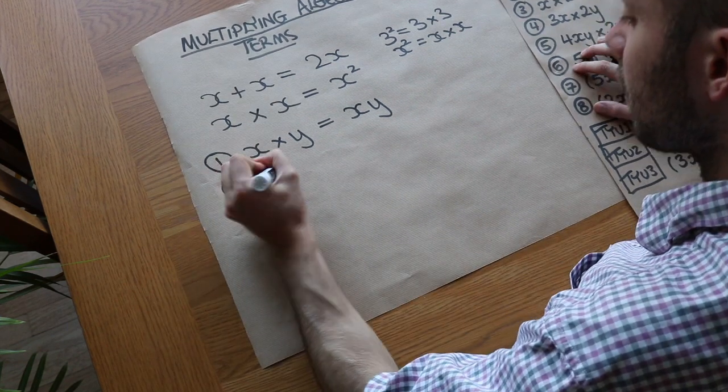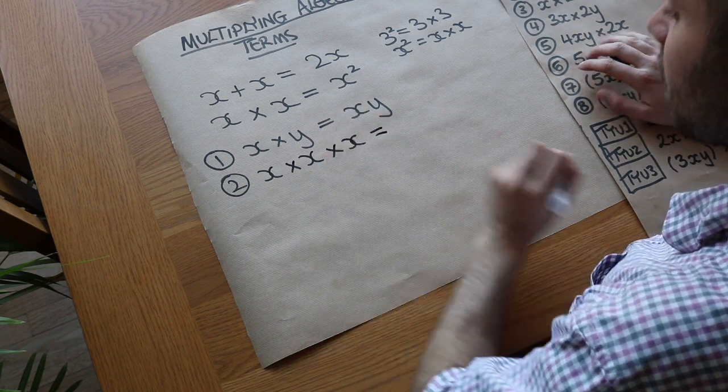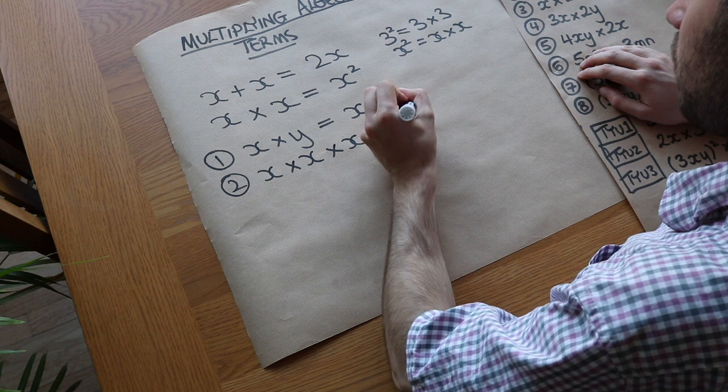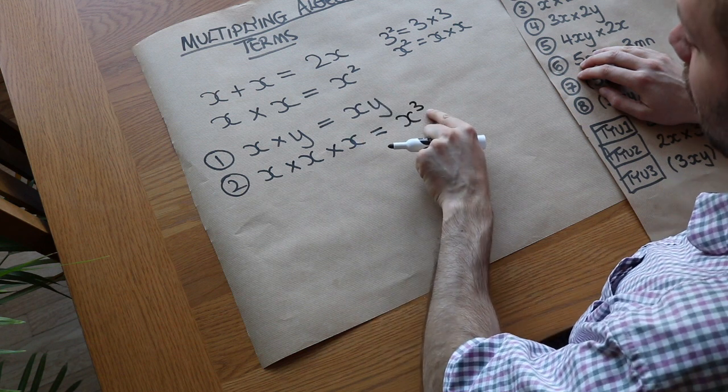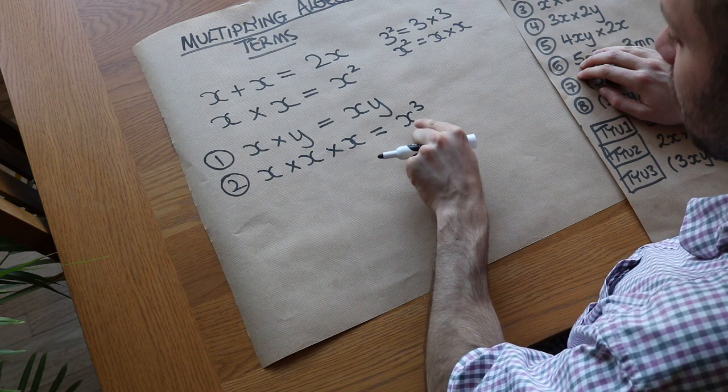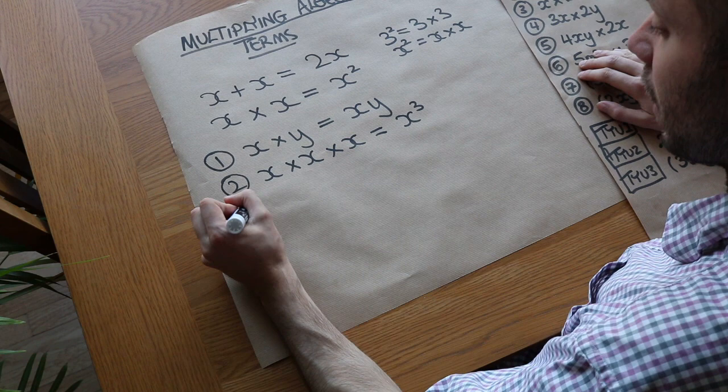Question 2. If we've got x times x times x, what is that? Well, it's actually x cubed. And the reason is, if we know that anything cubed means that thing times itself times itself. So it's x times x times x would be the same as x cubed. It's not 3x.